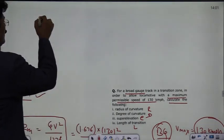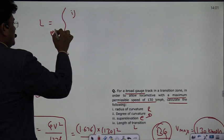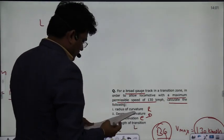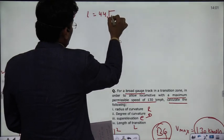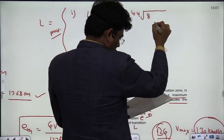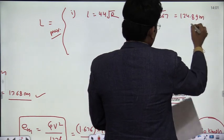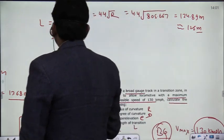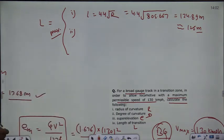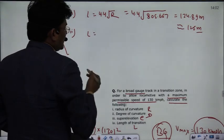The fourth thing is the length of the transition curve. There are three conditions and the maximum result is taken as the answer. The first condition is the Railway Board formula: L = 4.4 × √R = 4.4 × √805.667 = 124.89 meters, roughly 125 meters.